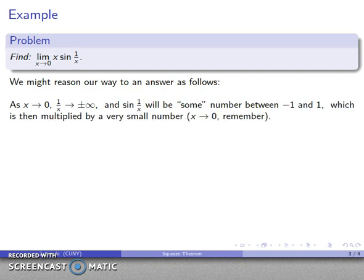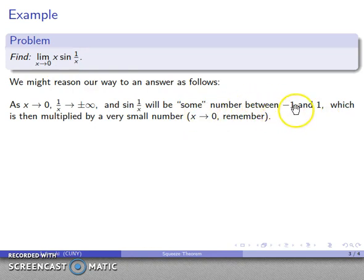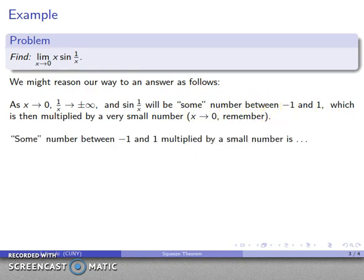But that doesn't bother us because we don't care about sine of 1 over x — we care about x times sine of 1 over x. Whatever sine of 1 over x is, it's going to be multiplied by a very small number, since x is going to 0. So I have some number between minus 1 and 1 being multiplied by a very small number, and what I'm going to get is 0. So I can conclude that this limit is equal to 0, without applying any high-powered theorems.